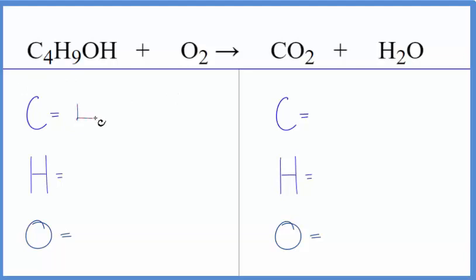We have four carbons, nine hydrogens, plus we have this one here. So we have ten hydrogens. Oxygens, we have one plus the two in the O2. Make sure you get all those right.